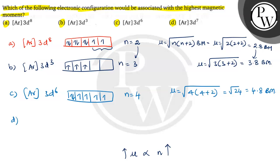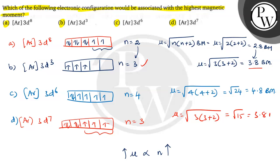And D option, that is argon 3d7, d orbitals having 7 electrons: 1, 2, 3, 4, 5, 6, 7 electrons. The number of unpaired electrons are how many? Number of unpaired electrons, 3. If unpaired electrons are 3, what is the magnetic moment? 3.8. So mu is equal to root over 3 into 3 plus 2, root 15, again 3.8 Bohr magnetons.